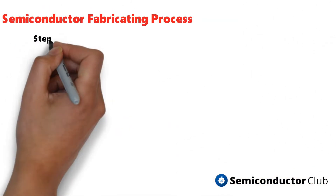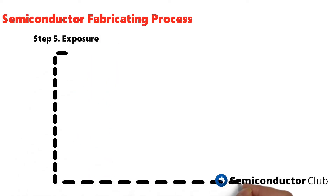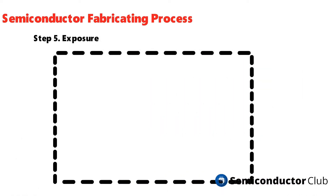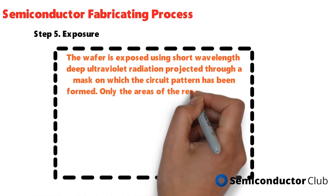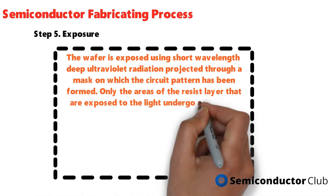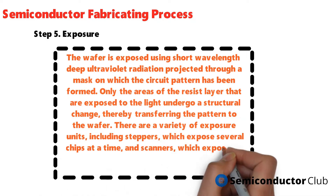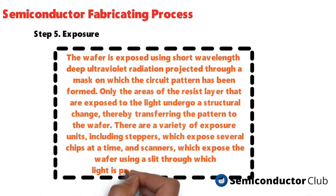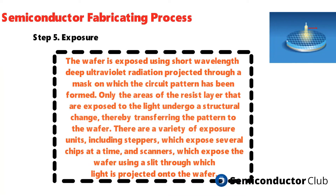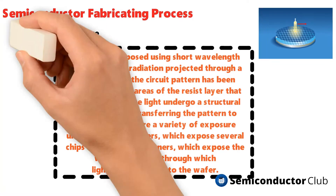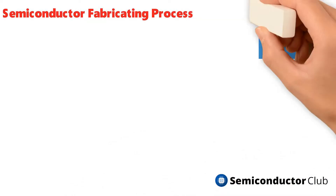Exposure: the wafer is exposed using short-wavelength deep ultraviolet radiation projected through a mask on which the circuit pattern has been formed. Only the areas of the resist layer exposed to the light undergo a structural change, transferring the pattern to the wafer. Exposure units include steppers, which expose several chips at a time, and scanners, which expose the wafer using a slit through which light is projected.